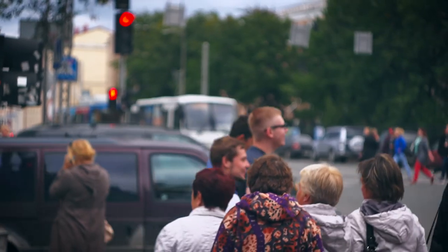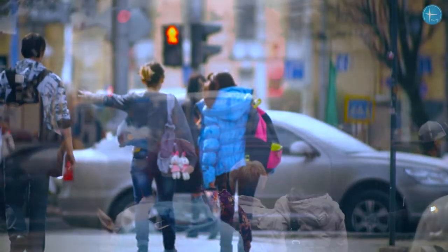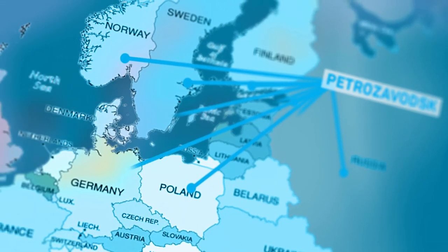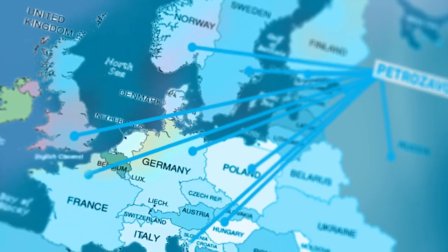The capital of Karelia, Petrozavodsk is a scientific, cultural and industrial center of the Republic. At the same time, it is a comfortable and safe city. The city is conveniently located in the center of northwestern Europe, not far from Moscow, St. Petersburg and Finland.